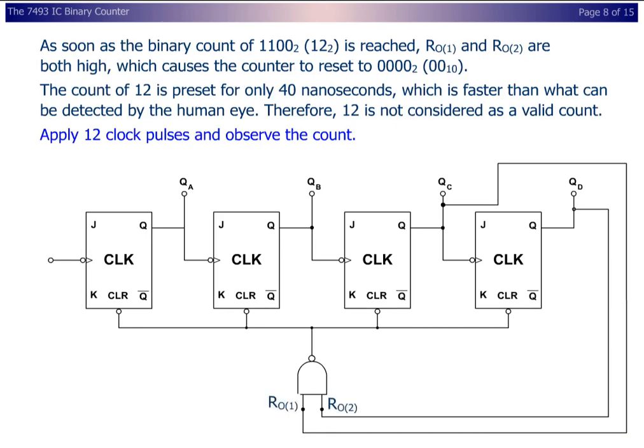As soon as the binary count of 1100, the decimal equivalent of 12, is reached, R01 and R02 are both high, which causes the counter to reset. The count of 12 is present for only 40 nanoseconds, which is faster than what can be detected by the human eye.